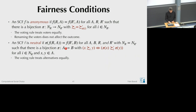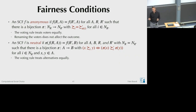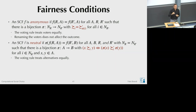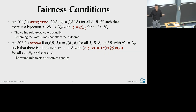Since π is a bijection, the feasible sets A and B must have the same number of alternatives. The sets could be identical—with alternatives cyclically renamed within the same feasible set—or disjoint sets of equal size, where A becomes D, B becomes E, and so on. All of this is permitted under neutrality.